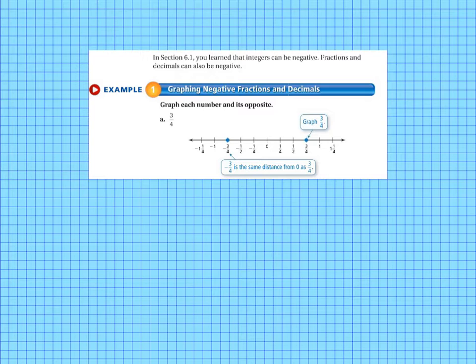We are going to start right off with example 1a, graphing negative fractions and decimals. And I want you to take a look at the note above the example where it says that in section 6.1, you learned that integers can be negative. And this is the important part, fractions and decimals can also be negative. So we are going to learn how to graph negative fractions and decimals.